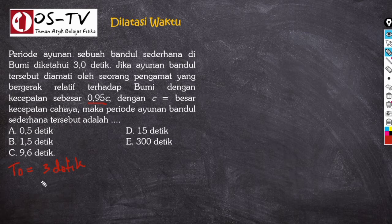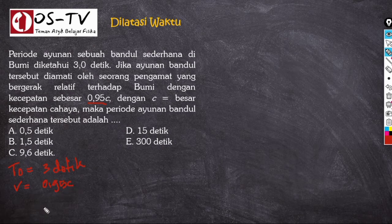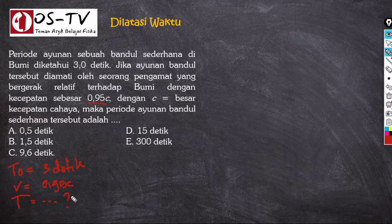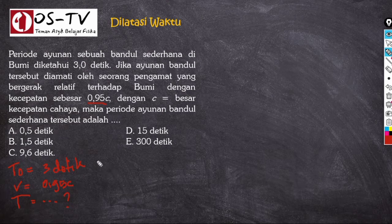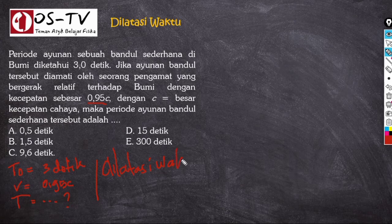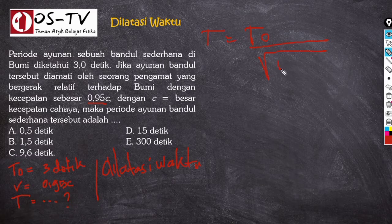Kecepatan pengamat adalah V = 0,95C. Yang ditanyakan adalah T, yaitu periode bandul ketika diamati oleh pengamat yang bergerak dengan kecepatan 0,95C. Soal ini dapat kita selesaikan dengan konsep dilatasi waktu, menggunakan persamaan T = T₀ dibagi akar (1 − V²/C²).